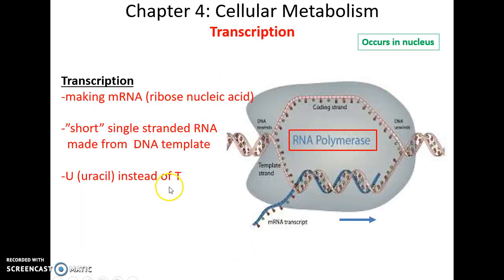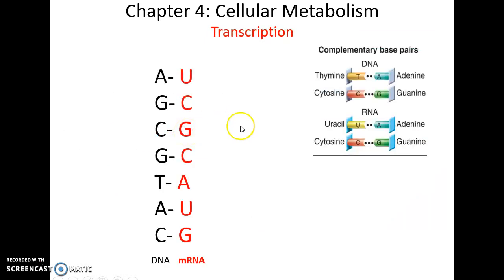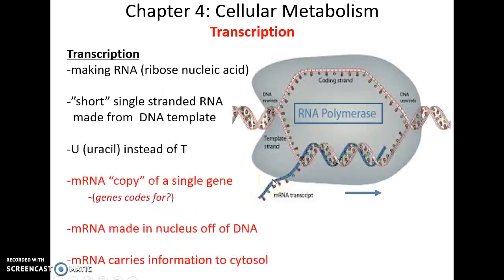The mRNA is formed via transcription, where an RNA polymerase enzyme opens the DNA strand and makes a new strand of RNA that copies the DNA sequence. One big difference is that in RNA, you have uracil (U) instead of thymine (T). So the RNA will pair: U to A, C to G, G to C, A to U — complementary base pairing. The single strand codes for a single gene that makes a polypeptide or protein, and then it leaves the nucleus to go into the cytosol.